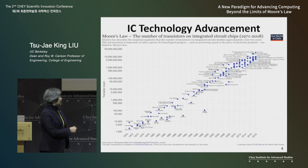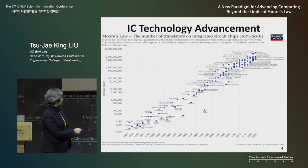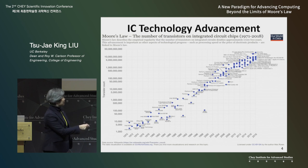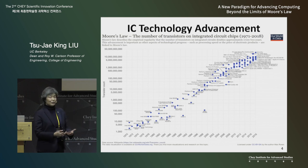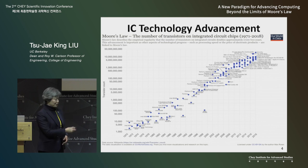This plot shows the number of transistors on a chip — this is a log plot, so 1,000 is down here and 10 billion is up here. Over the last 50 years, the number of transistors on an integrated circuit chip has steadily increased at an exponential pace, because every two years or so a new generation of technology comes out and we can double the number of transistors manufactured on a chip with high yield.